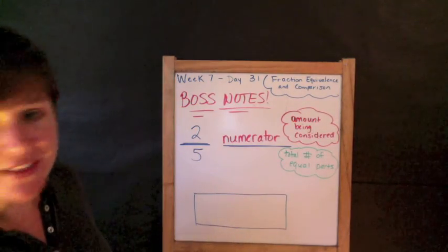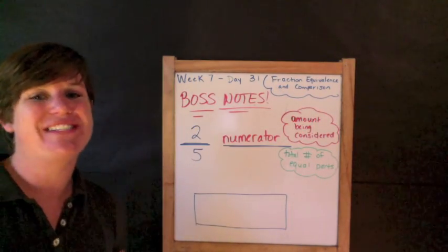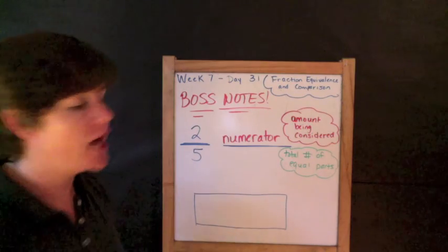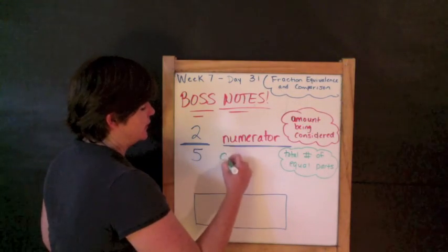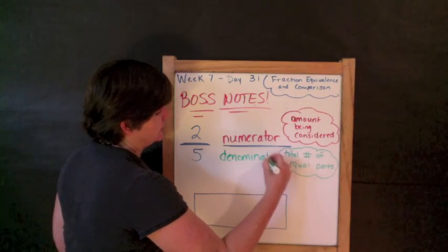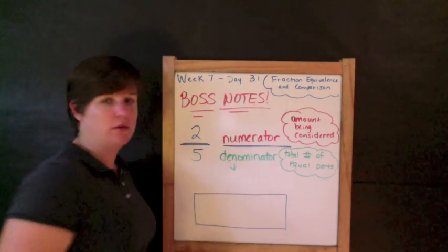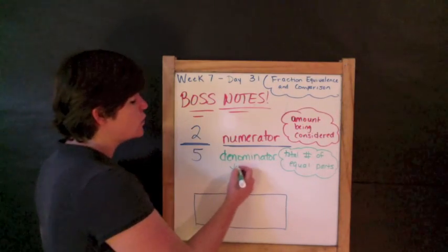And the one that is down, down, down below is our down denominator. Our denominator is the total number of equal parts. Denominator down.